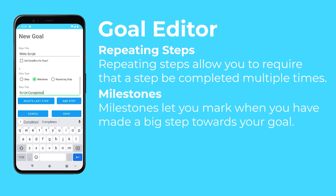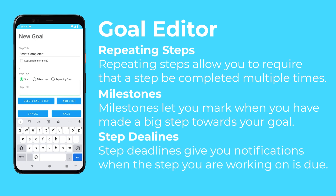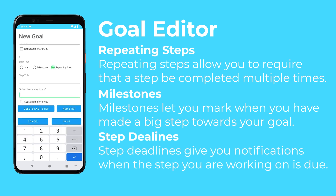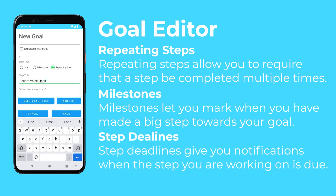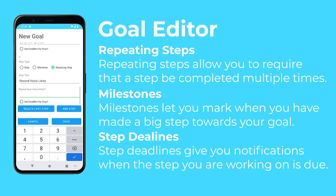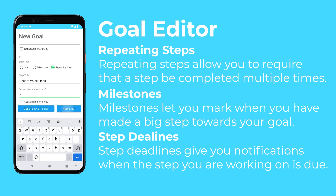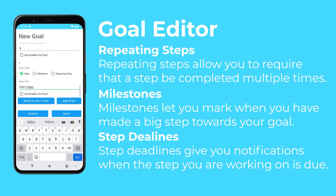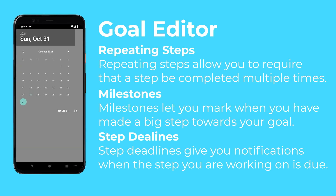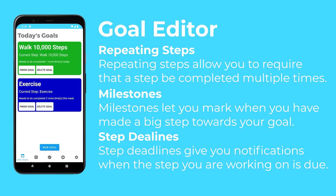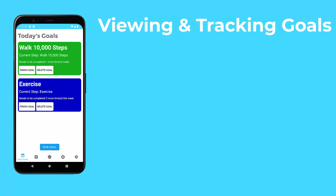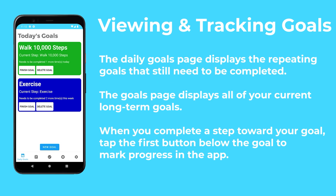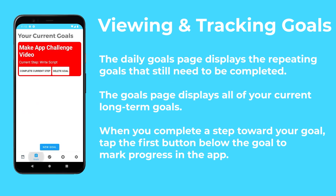On long-term goals, you can set deadlines for each step and get notified when a deadline is coming up. Once you have entered all of the goal information, you can view your goals on the daily goals and goals pages. The daily goals page shows you the repeating goals that are awaiting completion, and the goals page shows you all of your long-term goals.